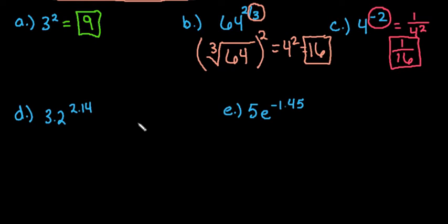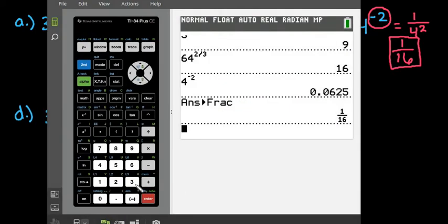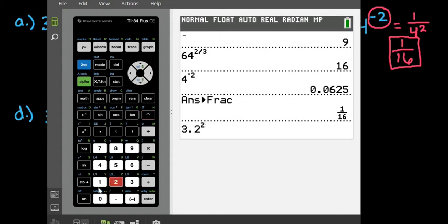All right, for these, because they are both irrational answers, you are going to have to use a calculator for this one. So for this one, you would just take 3.2, and then use the caret key to the 2.14 power.